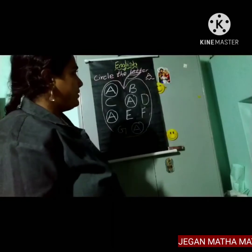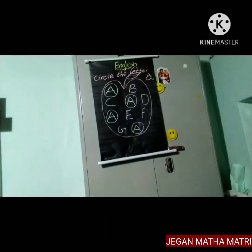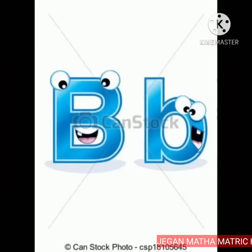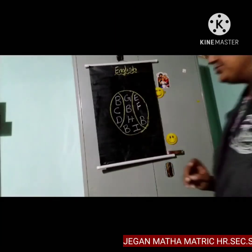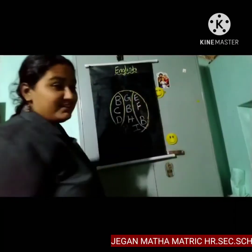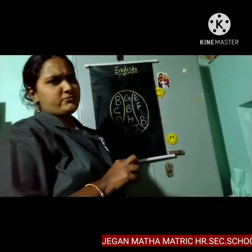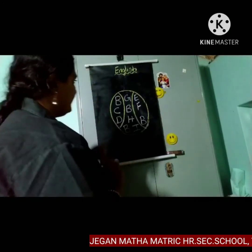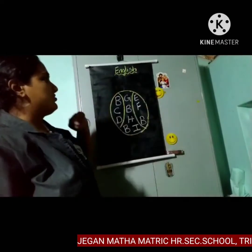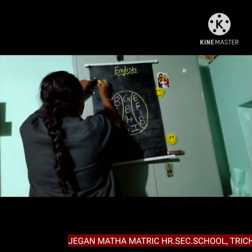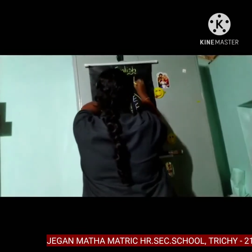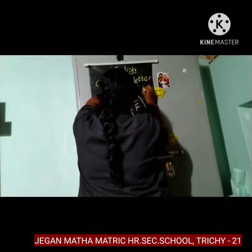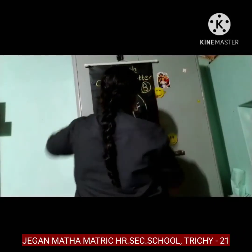Okay children, let's go to the next letter. What is this picture? A ball! What does this picture show? A ball. So what letter comes for ball? B! What's the sound for B? Buh! Now let's circle the letter B. What are you going to do? Circle the letter B!